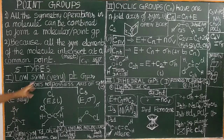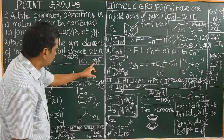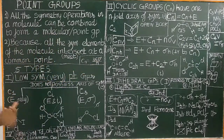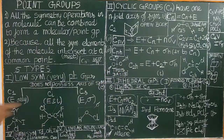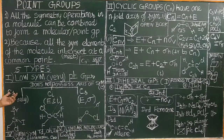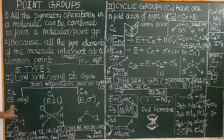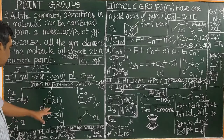In the case of C1, Cn equals 360 degrees divided by 1. Therefore, a rotation by 360 degrees is called E — it is nothing but the identity element operation. Therefore, C1 possesses only E. For example, an asymmetric carbon atom where all the groups are different possesses only the E symmetry operation.